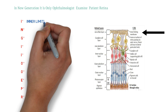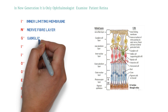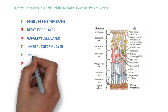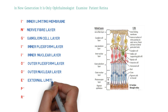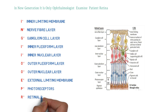Continuing the mnemonic: 'N' for the nerve fiber layer was already covered. Next, 'I' stands for the inner nuclear layer, 'O' for the outer plexiform layer, 'O' for the outer nuclear layer, 'E' for the external limiting membrane, 'P' for the photoreceptor layer, and 'R' for the retinal pigmented epithelium layer.